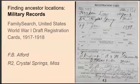Another place to find ancestor locations is military records. On this slide is my grandfather's World War One draft registration card from FamilySearch. It lists his father, F.B. Alford, as his next of kin. The address of his father's farm was Route 2, Crystal Springs, Mississippi.